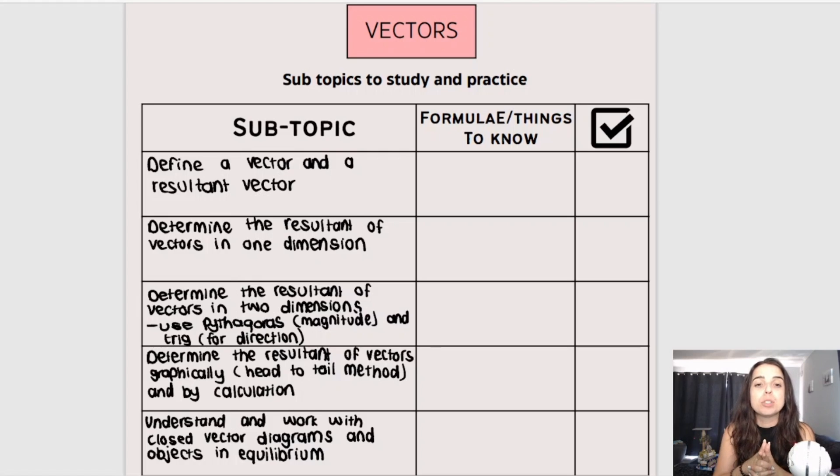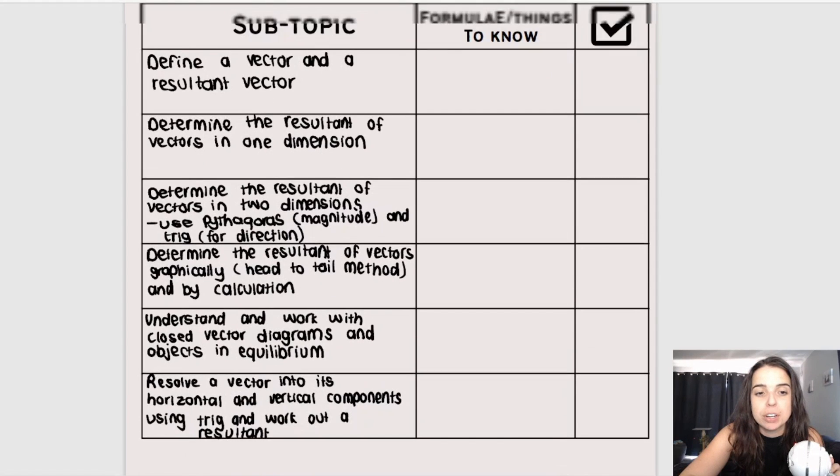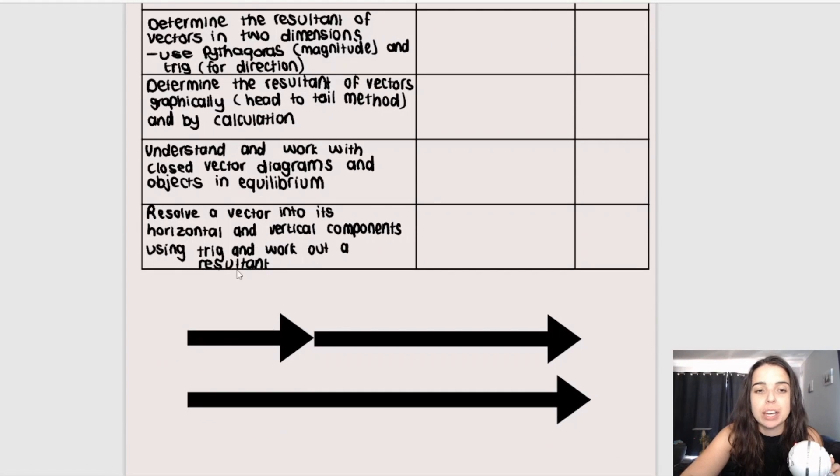What you also need to be able to do is to be able to resolve vectors or break down vectors into their components. And you can see that that is the last little column over here. So resolving a vector into its horizontal and its vertical components by using trigonometry. So you're going to use sin or you're going to use cos. And then ultimately using the vertical and horizontal components to work out a resultant. You also need to understand closed vector diagrams and objects in equilibrium.